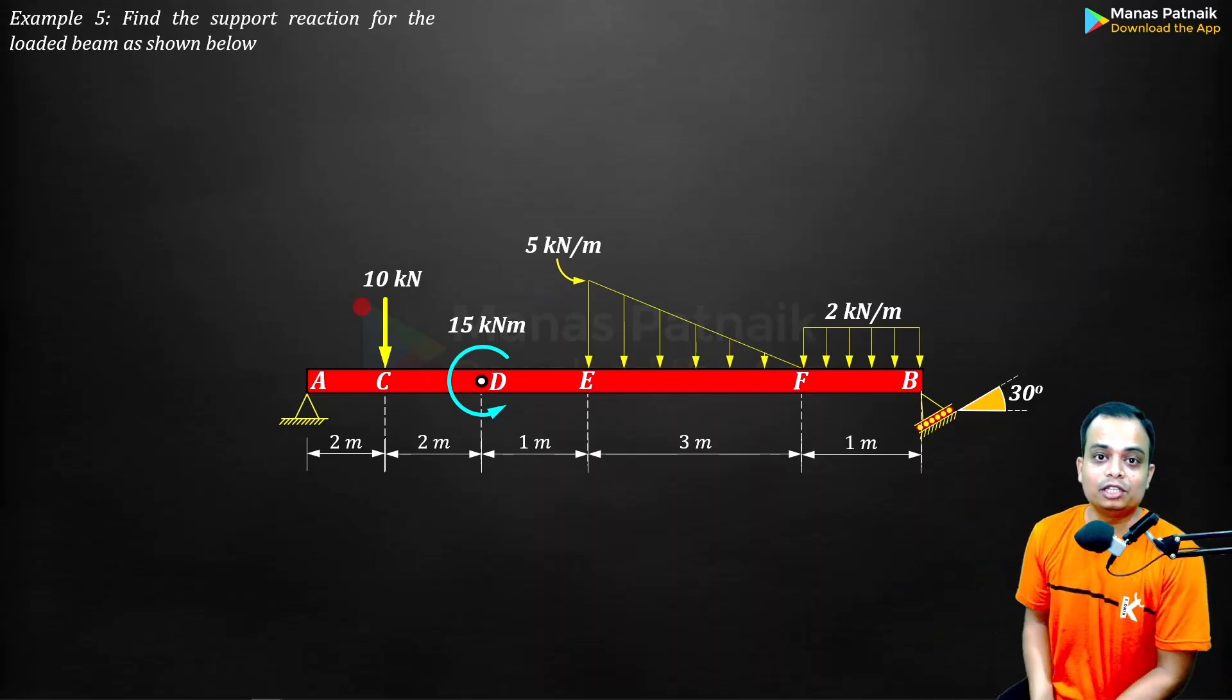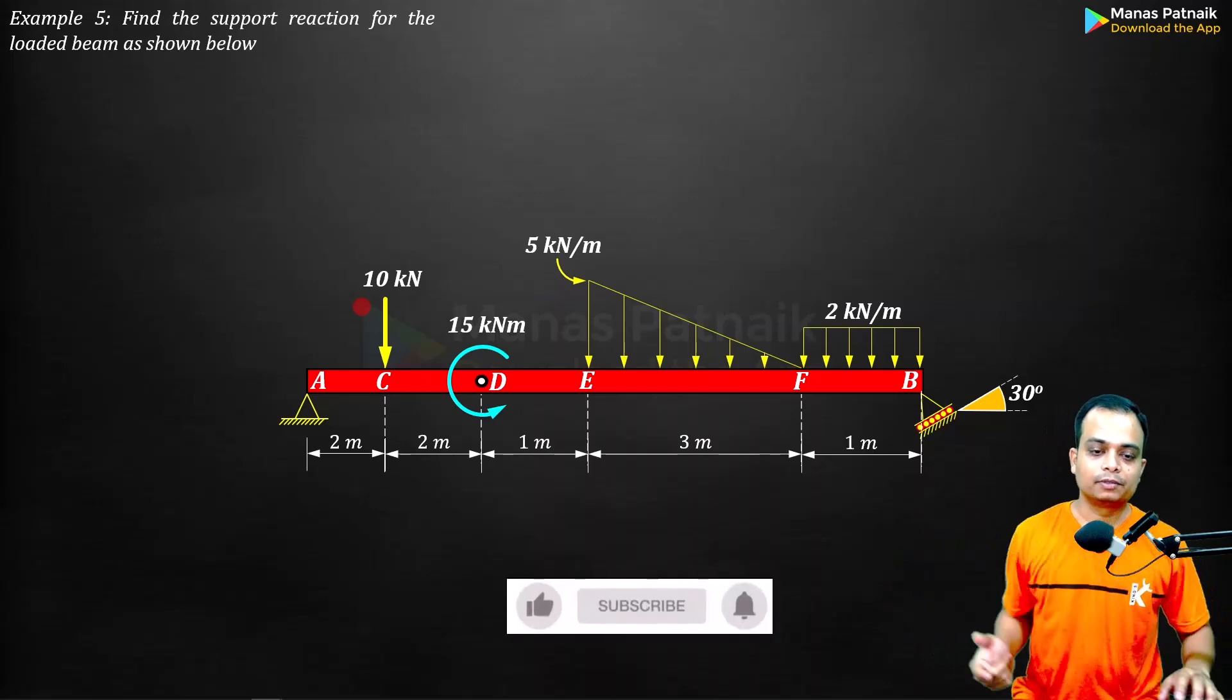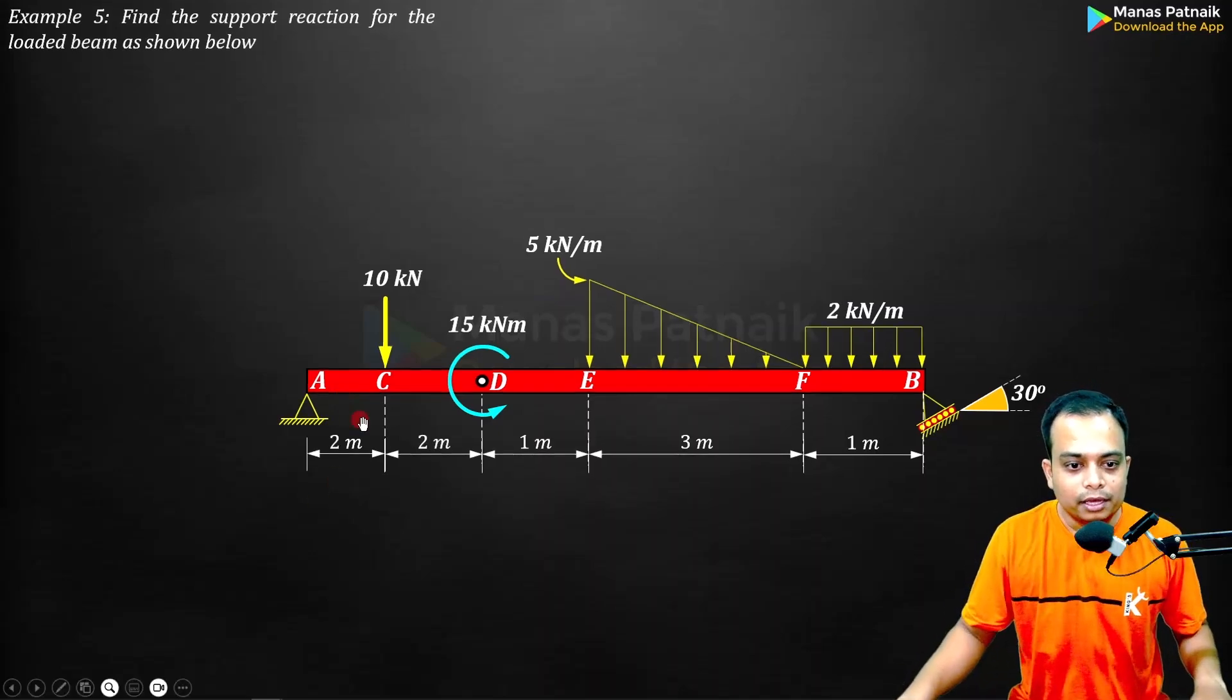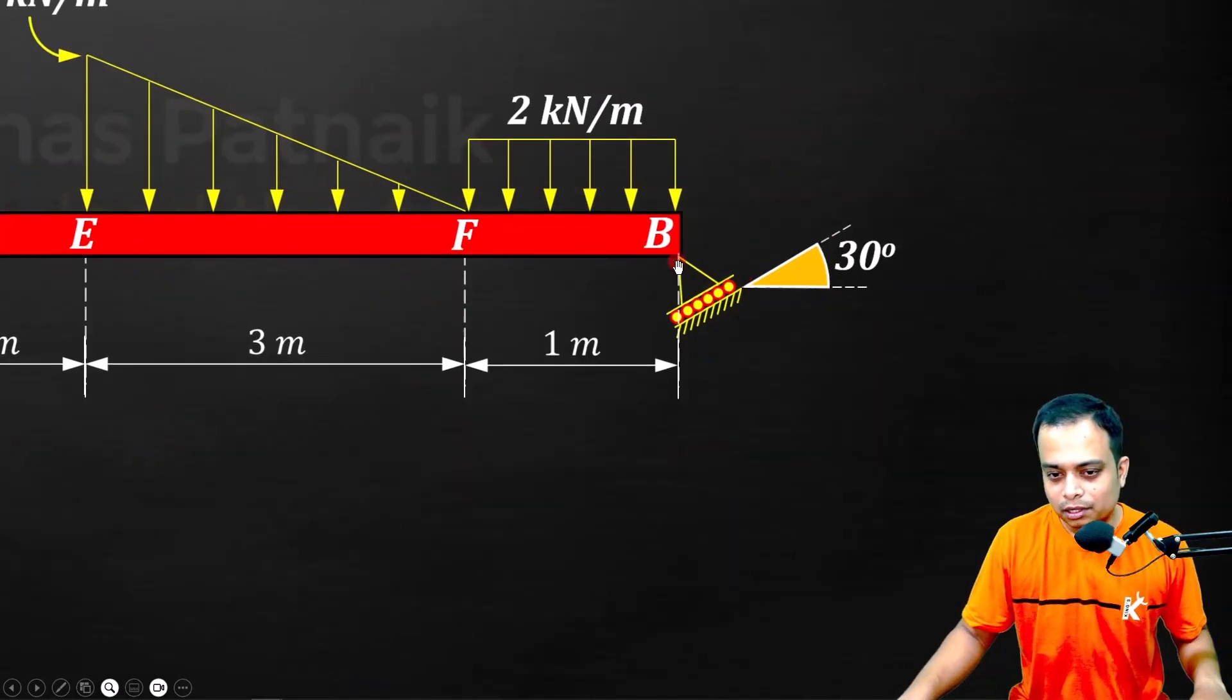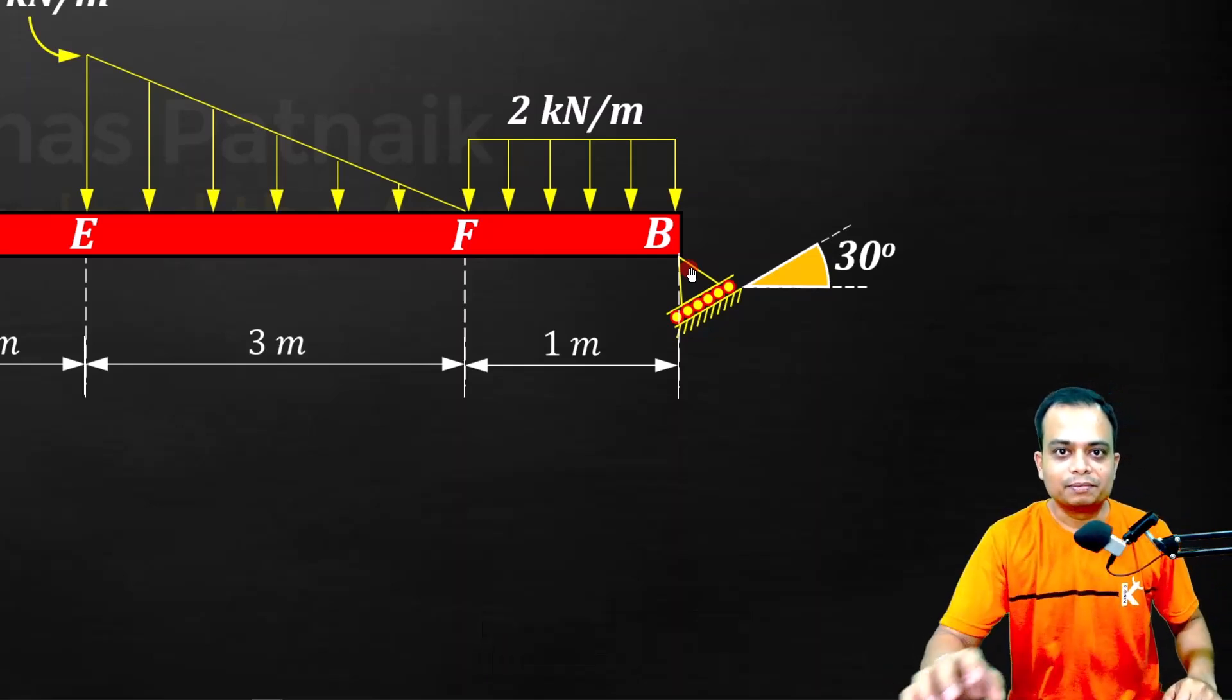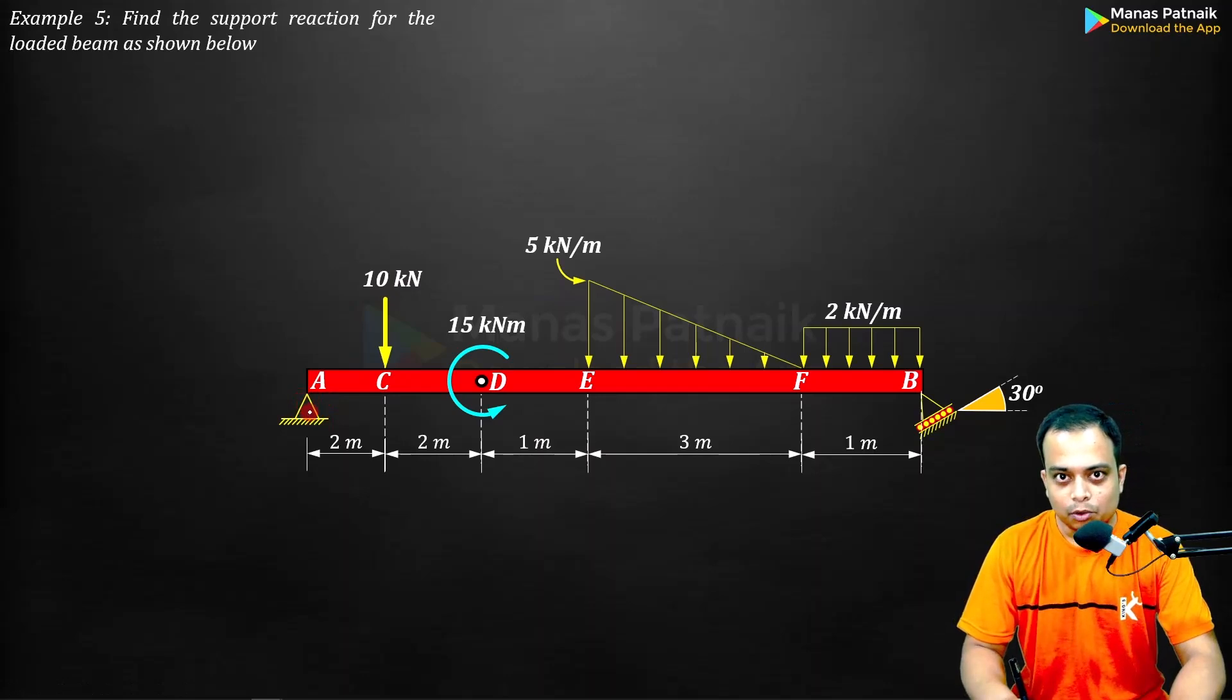This is especially for all the students from JNTU Hyderabad and Pune universities because I have observed that such problems appear pretty often in their end semester examinations. The first thing in any engineering mechanics problem is to make the free body diagram. What is the body? It's simply a beam. You need to free this beam from the support at A and from the support at B. If you notice, this roller support here is an inclined roller support at an angle of 30 degrees, therefore the reaction will also be inclined.